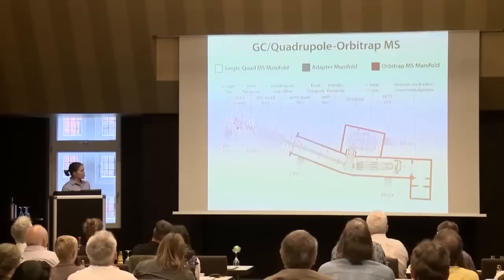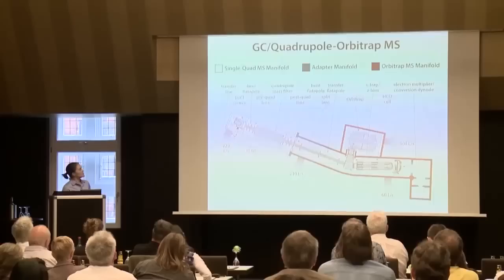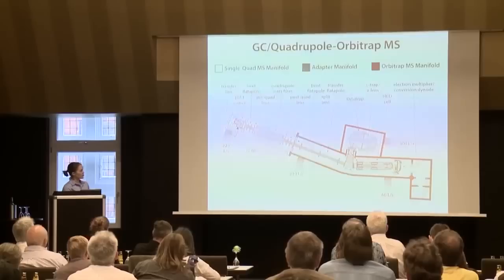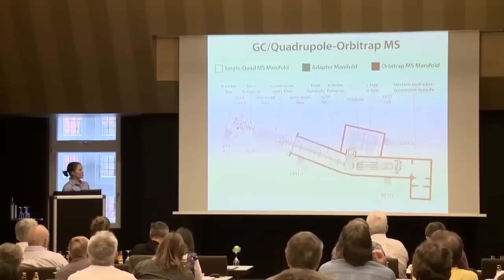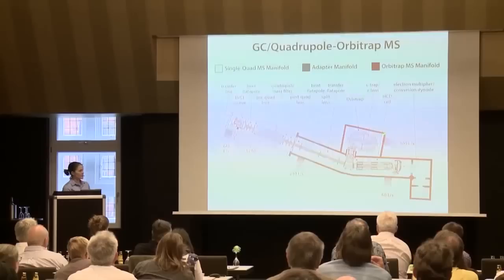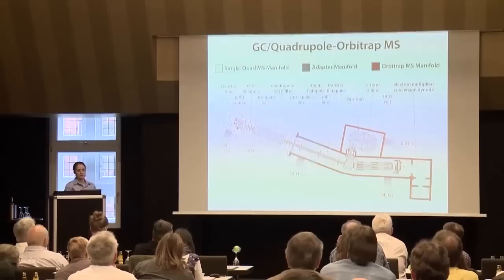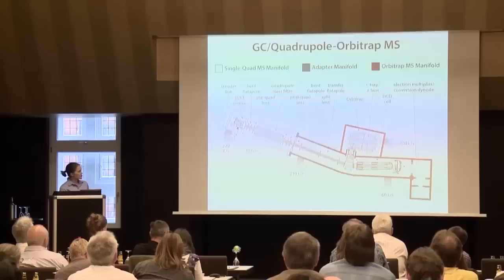This is the GC quadrupole orbitrap MS that we built and now resides in Joshua Kuhn's laboratory in Wisconsin. Here you see the entrance from the GC, an electron ionization or chemical ionization source. Ions then travel down this path through a resolving quadrupole for mass selection, and then further to the C-trap, where they are trapped and then injected into the mass spectrometer. We also have a collision cell for doing beam-type CID.